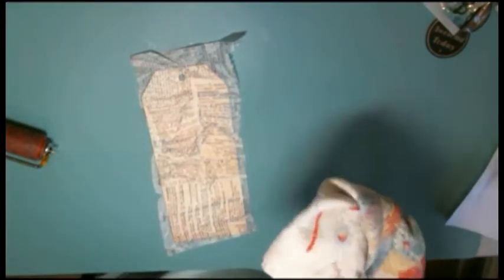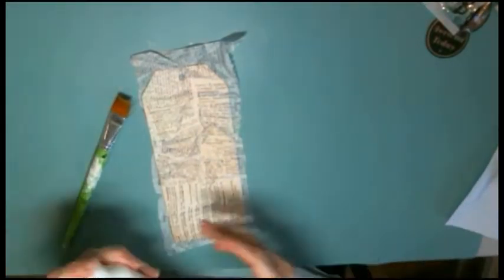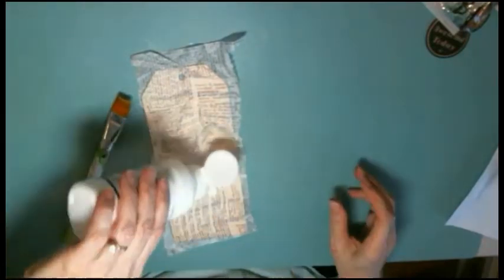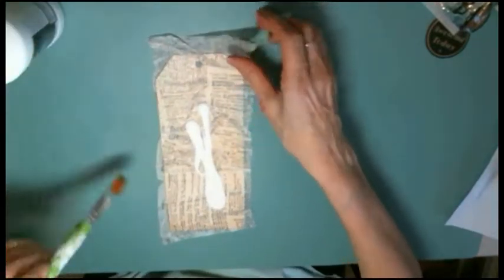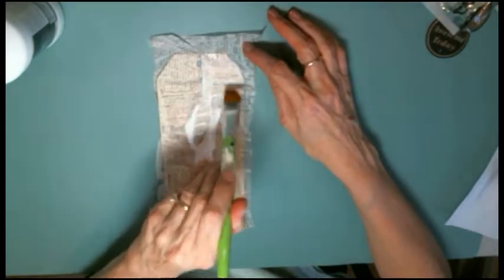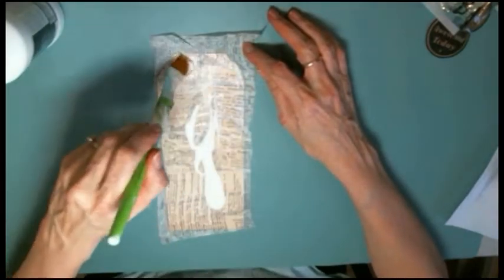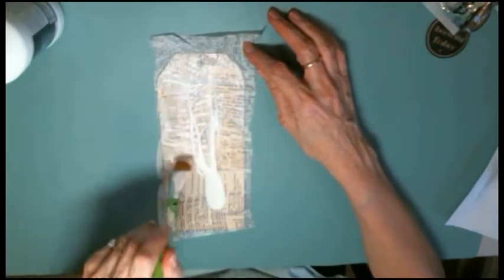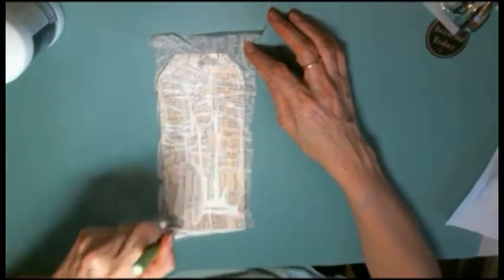Now you want some gesso. You can use white gesso or you can use clear gesso. I'm going to use clear gesso. Normally I use white, but I feel like doing something a little different today. So I'm going to put a coat of clear gesso on this. It looks white, but when it dries, it'll be clear.